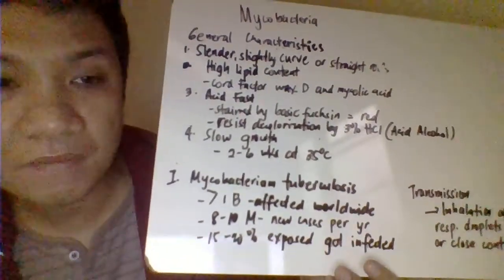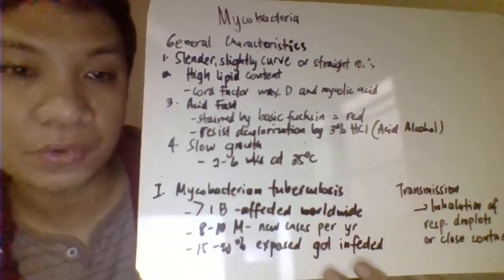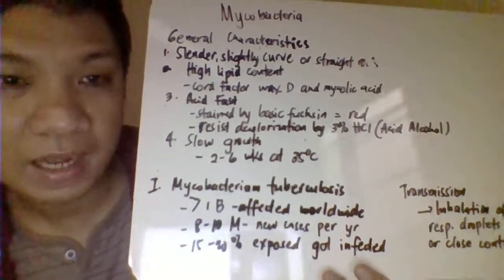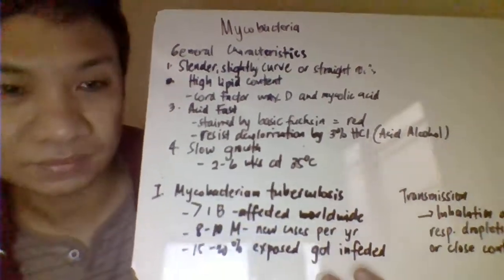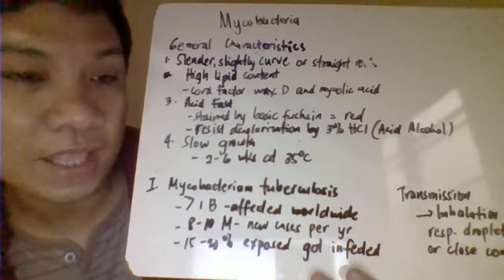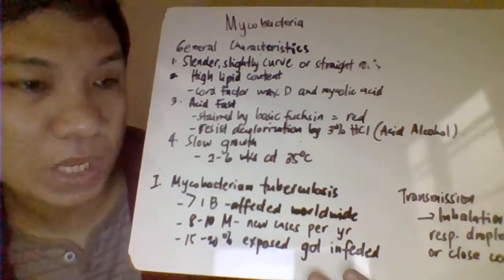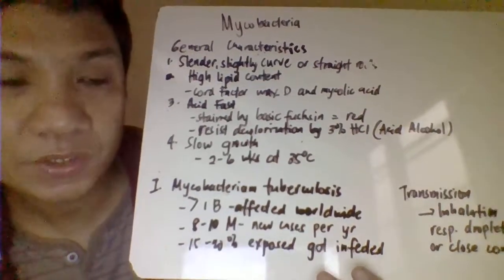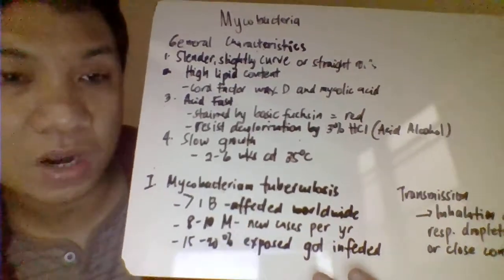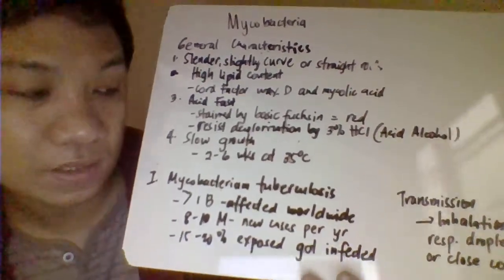Mycobacteria also have slow growth characteristics, able to grow over a longer duration — typically 2 to 6 weeks — usually at an optimum temperature of 35 degrees Celsius.